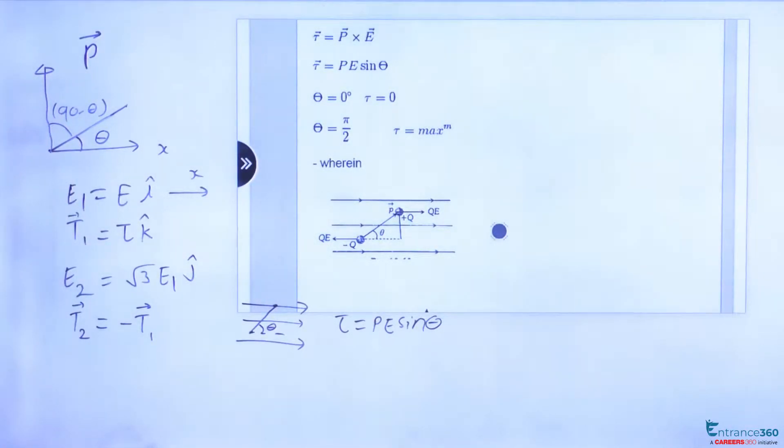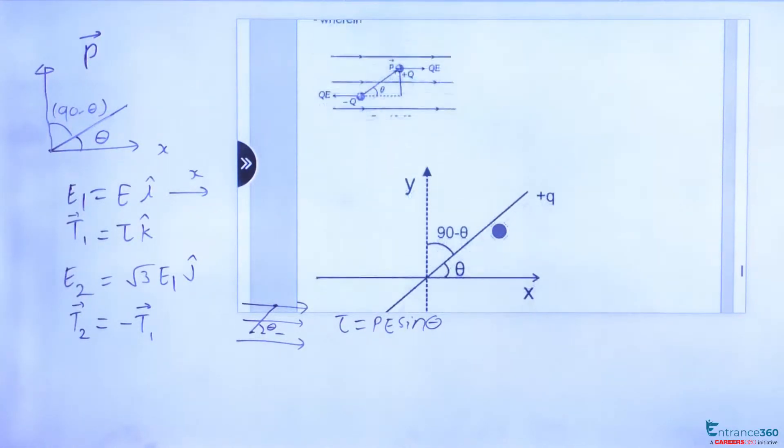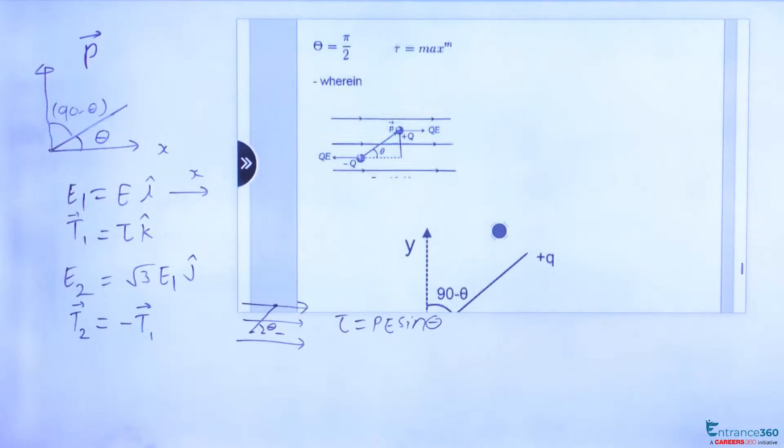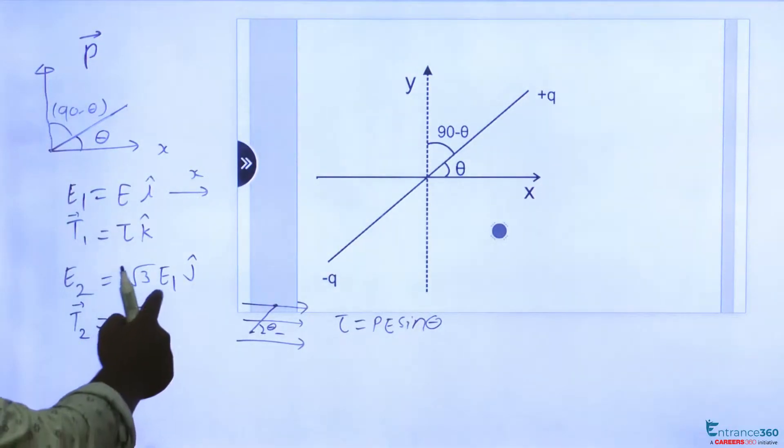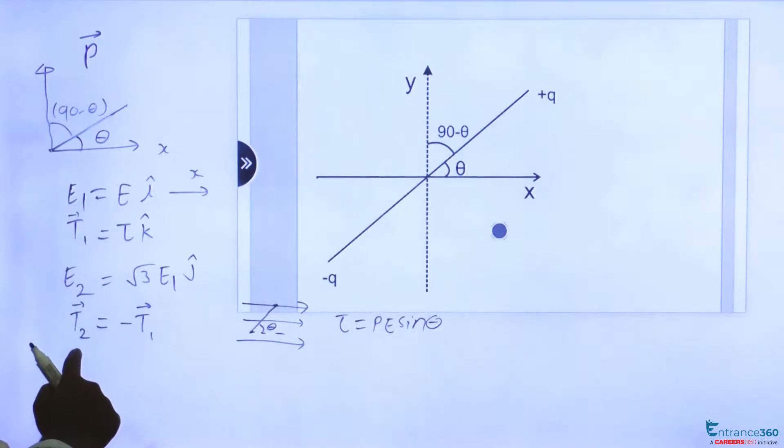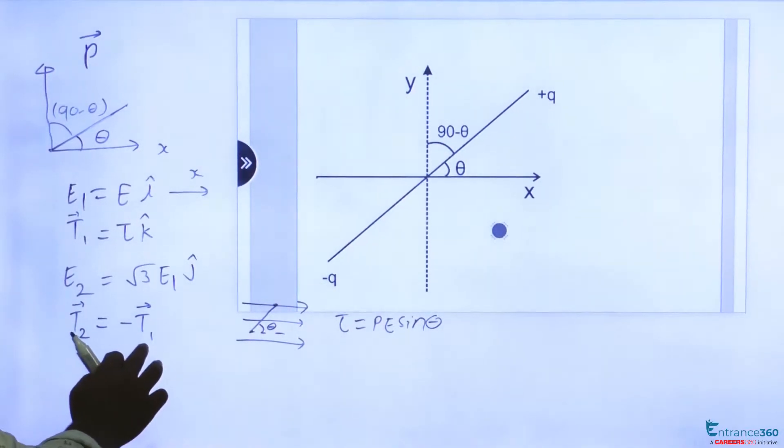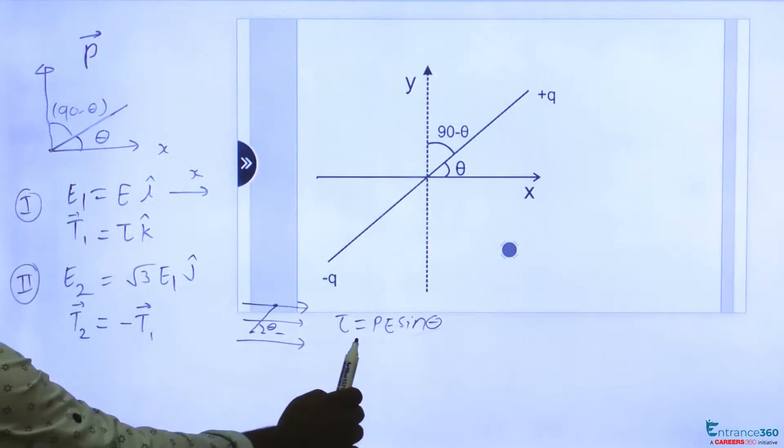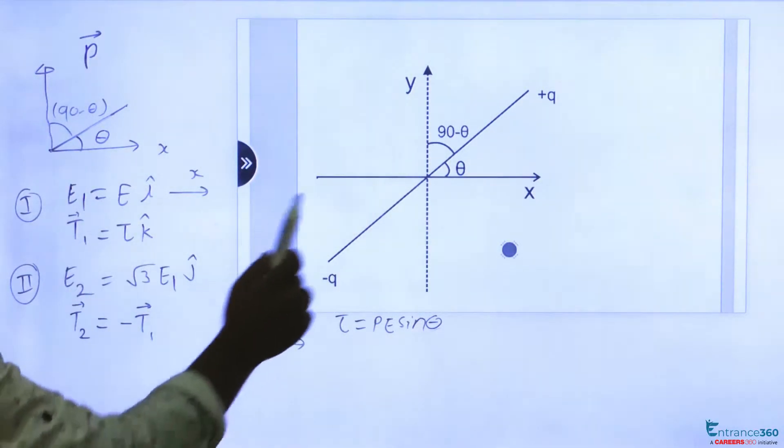So we have two conditions. One condition says when E₁ equals E i cap we get torque 1 equals τ k cap. And in the second situation we have E₂ equals root 3 E j cap then we get value of τ₂ equal to minus torque 1. So we have formula for torque and two situations and this is the figure.